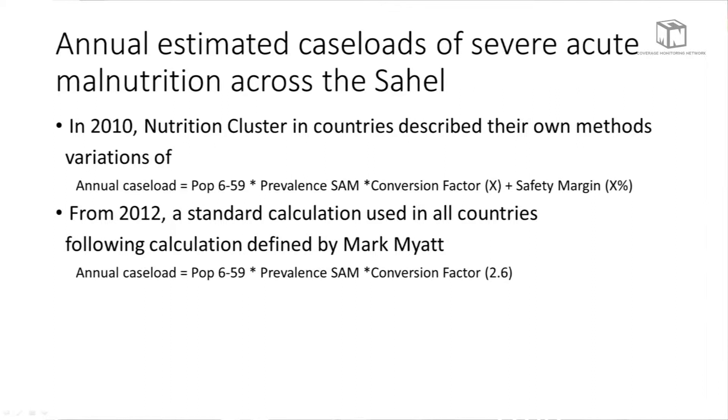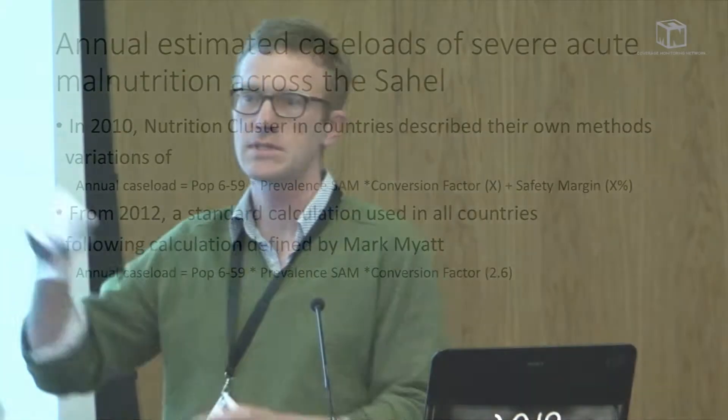In 2010, the nutrition cluster, or the equivalent in countries, described their own methods for the calculation of annual caseloads. These were calculations where the population six to 59 months of age, times the prevalence of SAM, times a conversion factor decided upon in-country, plus a safety margin decided upon in-country. In some countries, they set their annual caseload, calculated it as rigorously as possible, and then struggled and didn't reach those targets.